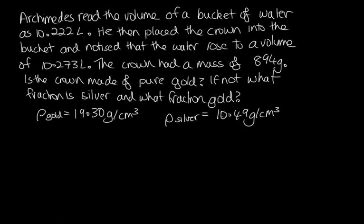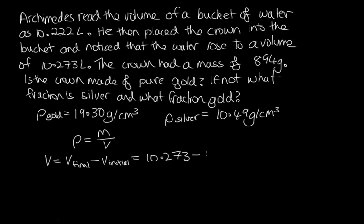Let's start by working out the density of this crown, which will tell us if it's made of pure gold. To work out the density, we use density equals mass over volume, so we first need the volume of the crown. The volume equals the final volume minus the initial volume: 10.273 minus 10.222, which is 0.051 litres. These densities are in centimetres cubed, which is millilitres, so we multiply by 1,000. The volume of the crown is 51 centimetres cubed, or equivalently 51 millilitres.